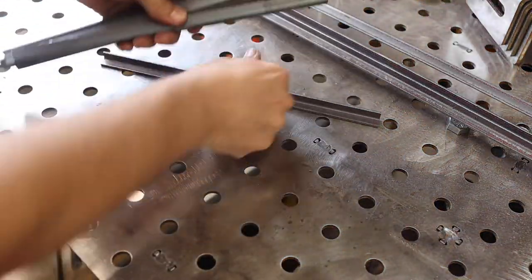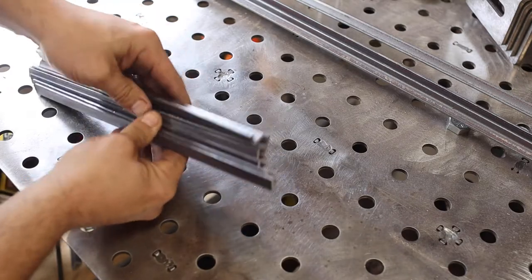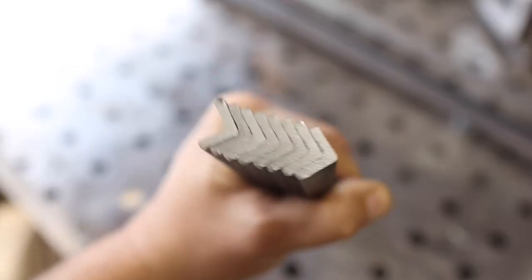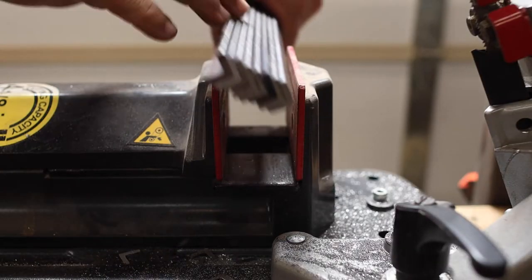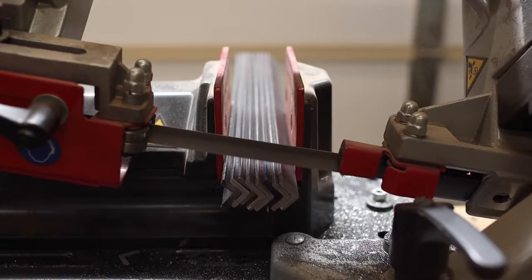The next step is to cut the vertical pieces to length and to make sure that I got them all the same length. I lined up one end so they were all flush, then I clamped them in place in the saw, and then I cut off the other end.